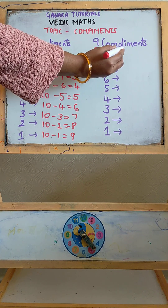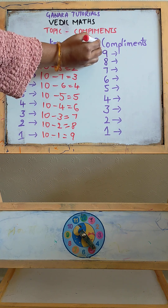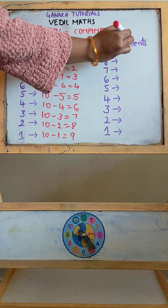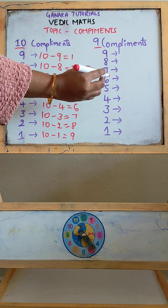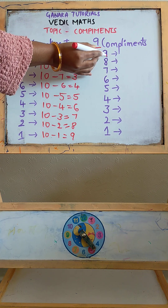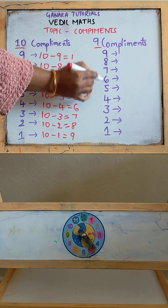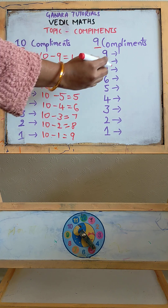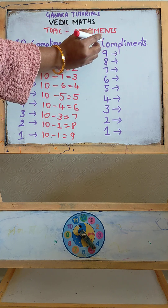Now we will learn for base 9. For base 9 complements, we have to deduct these numbers from 9.